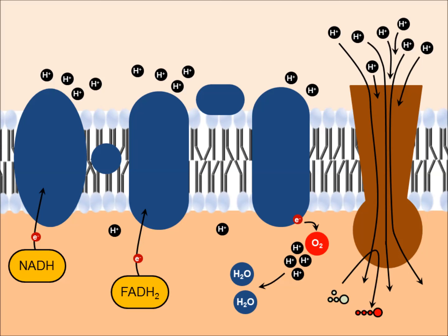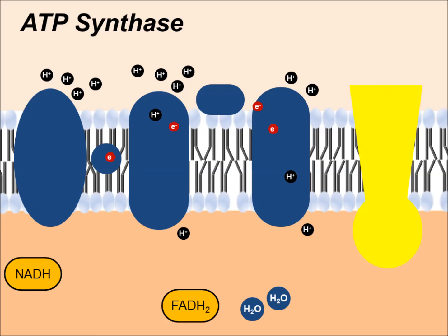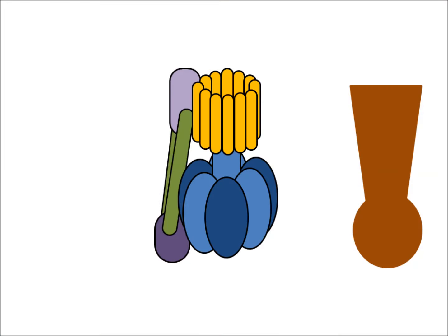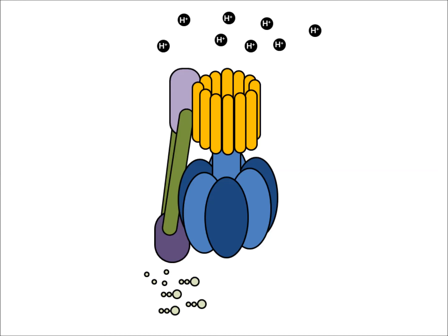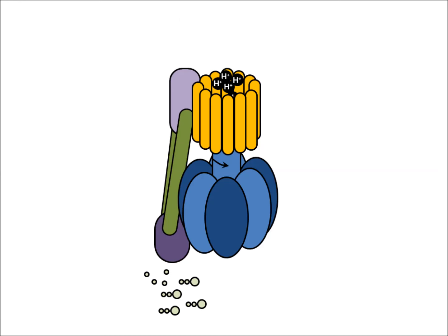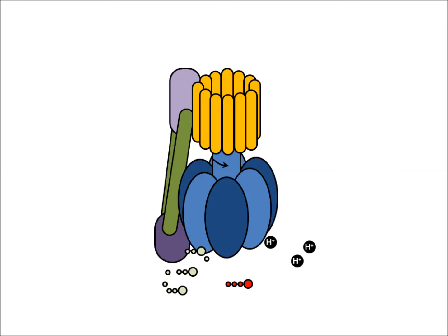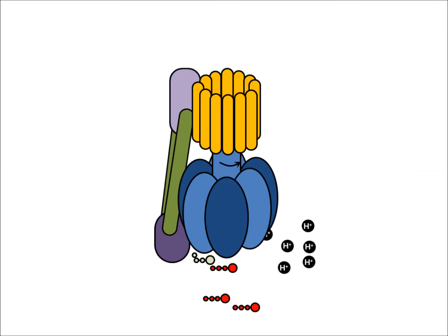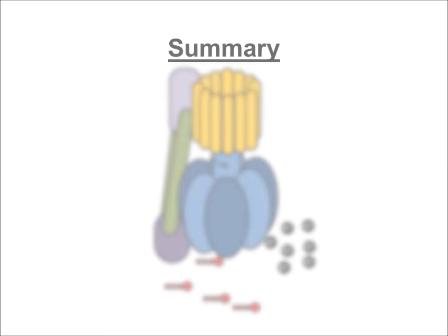Off to the side, there is another protein present that wasn't part of the electron transport chain — that protein is ATP synthase, an enzyme complex that lets protons move through it and uses that energy to generate ATP. Taking a closer look at ATP synthase, it has a fairly elaborate structure. As hydrogen ions pass through the channel component of the protein, additional parts of the molecule rotate, forming a turbine-like structure that converts rotational energy into chemical energy to form ATP.